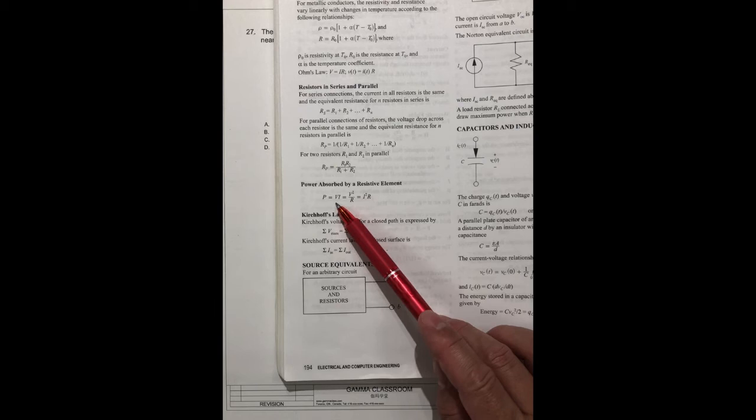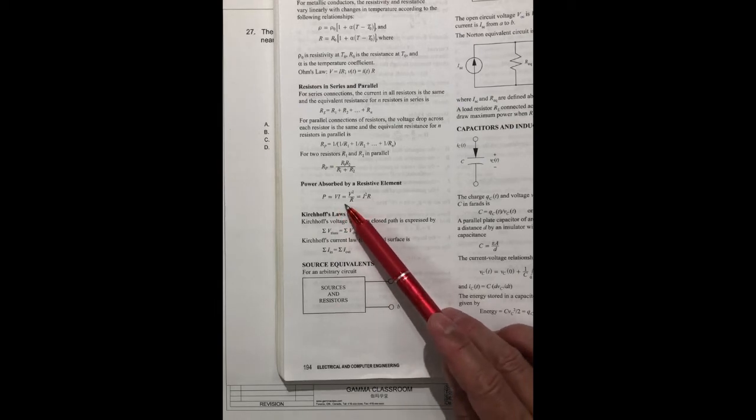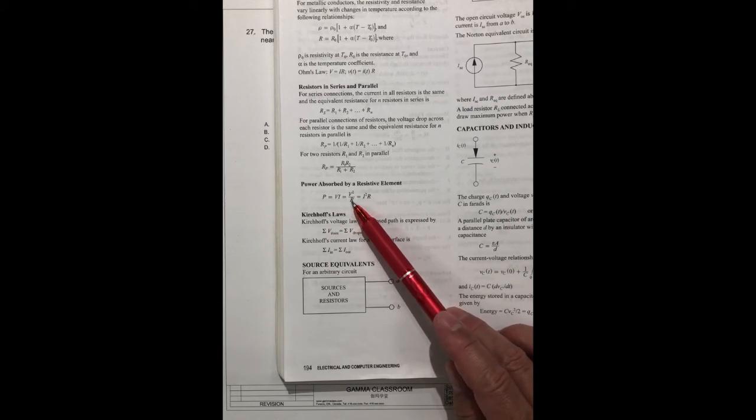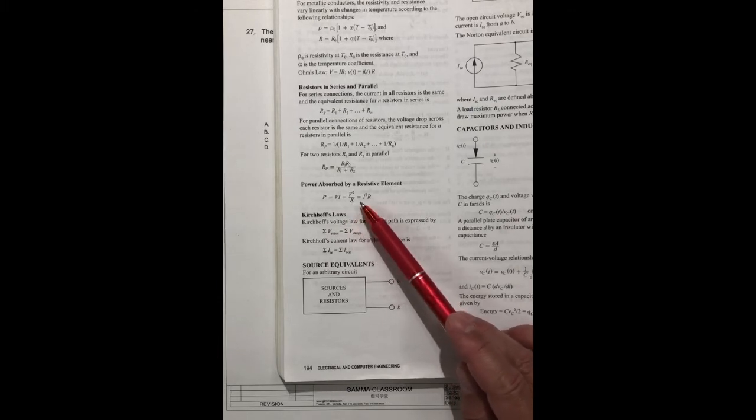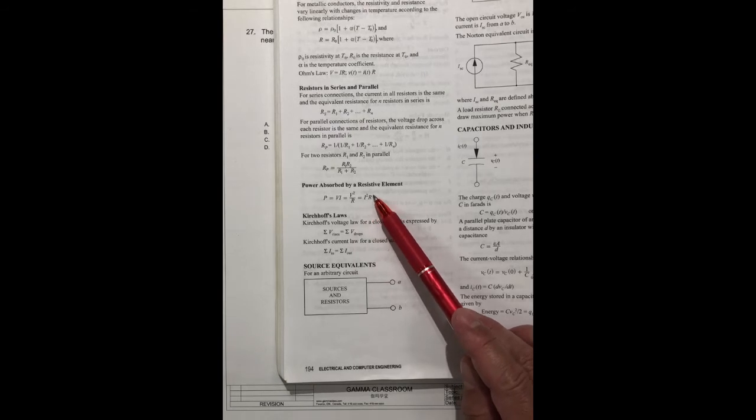V means the voltage, I is the current, equals V squared divided by R, or equal to I squared times R.